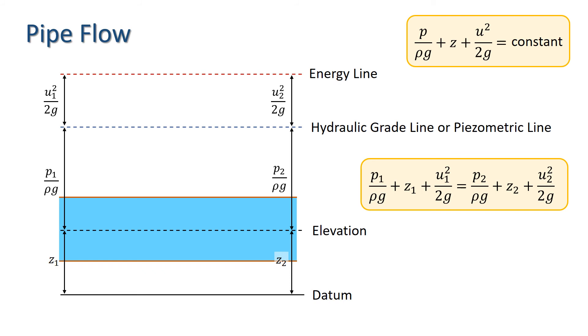So, for example, if we look at flow in a horizontal pipe, and assume that there are no energy losses, we get an energy diagram like this.